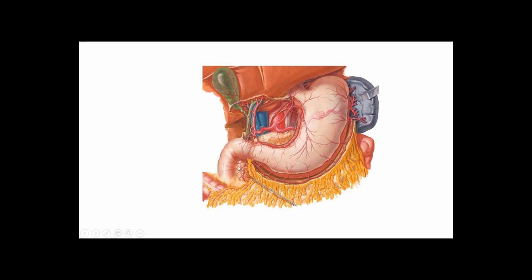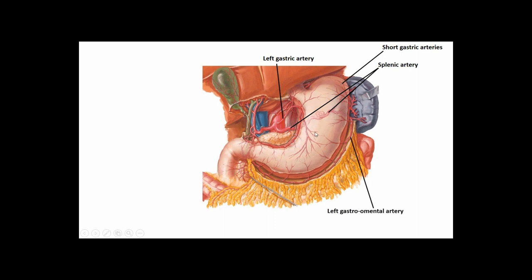Looking at the foregut, the celiac trunk gives off the left gastric artery going to the left side of the lesser curvature of the stomach. We have the splenic artery traveling posterior to the stomach towards the spleen. Off the splenic artery we have short gastric arteries going to the fundus of the stomach, and also the left gastroomental artery going to the greater curvature of the stomach and greater omentum.